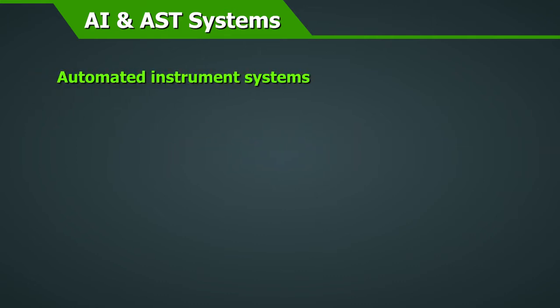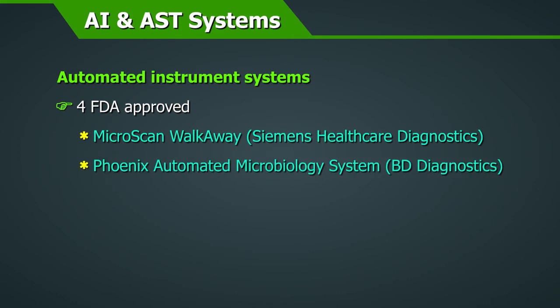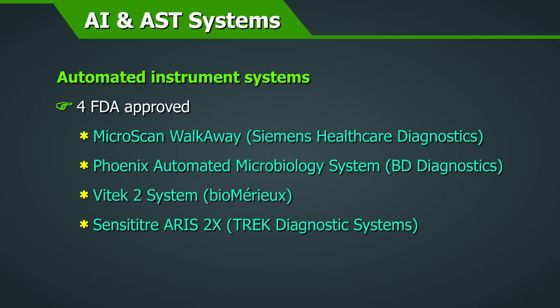The four FDA-approved automated identification and antimicrobial susceptibility testing instruments are: the MicroScan WalkAway, the Phoenix Automated Microbiology System, the Vitek 2 system, and the Sensititer AERIS 2X.